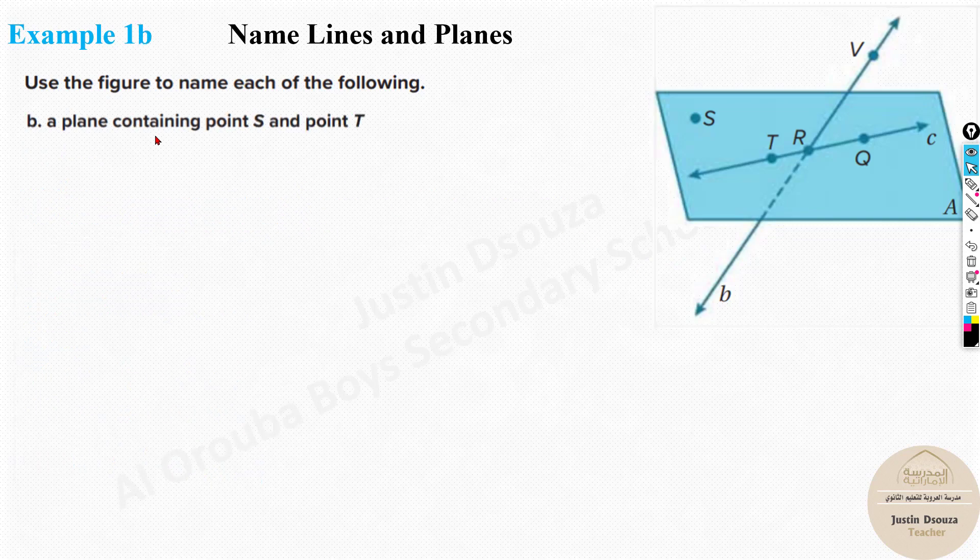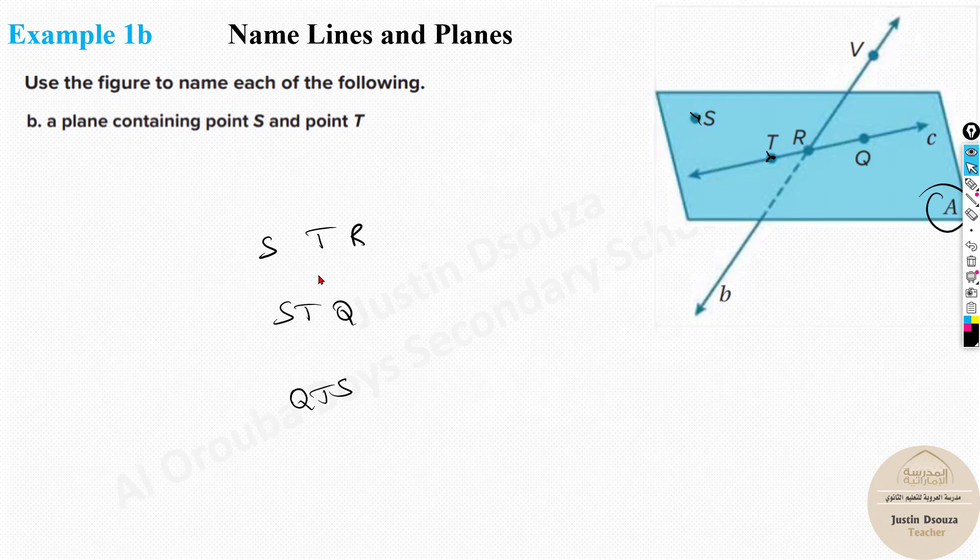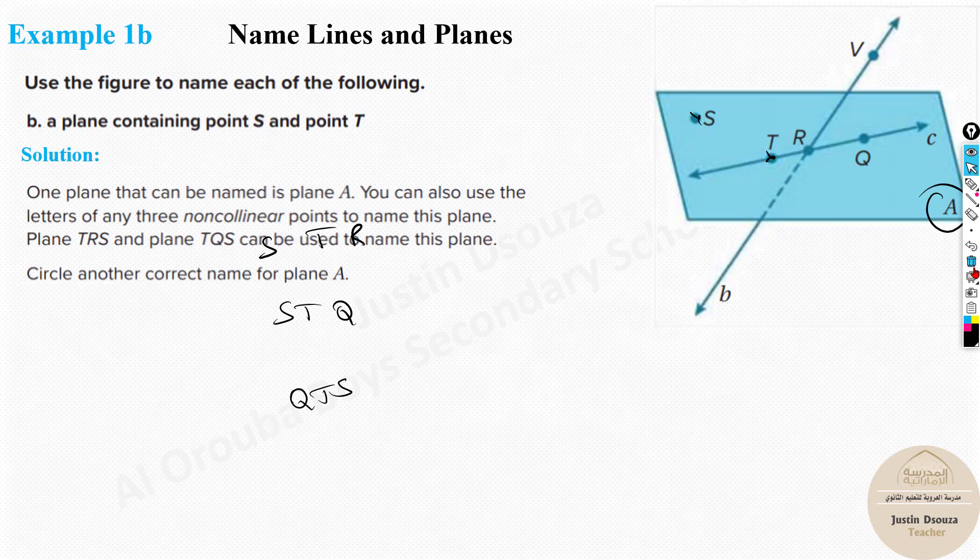The second question is a plane containing point S and the point T, which is the plane that has this and this. So it's the plane A over here. The plane A. Or you can write it in other names. That is S, T, R, plane S, T, R or S, T, Q. Or you can also tell QT. You know, you can just keep on giving plenty of names. I hope you get it. Any three, two collinear and one must be at least non-collinear. So it's the plane A that's the most important thing.